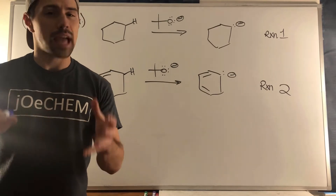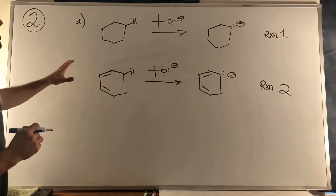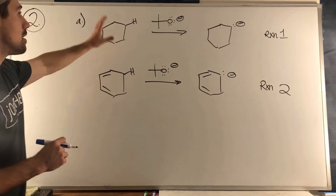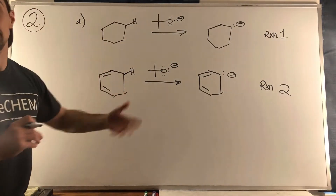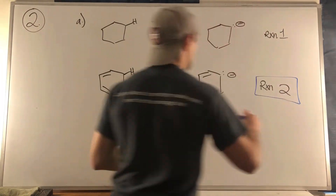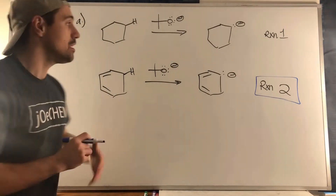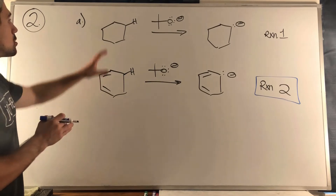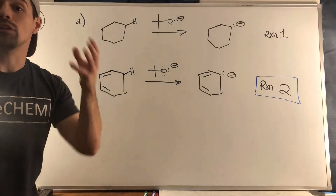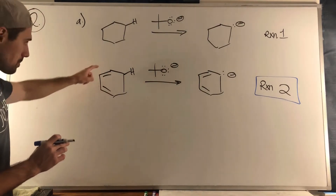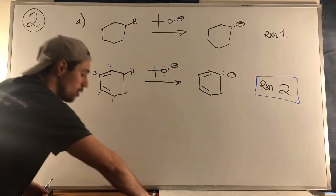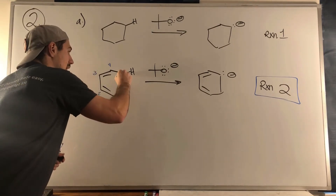Rolling into problem two, part A: we have two acid-base reactions. The same base is used in both, and we are told that reaction 2 is more favorable than reaction 1. We need to explain why. The difference is that reaction 1 uses plain old cyclohexane, while in reaction 2 we have double bonds in the mix — a conjugated system — and we're picking off H from the allylic position, which is adjacent to a double bond.